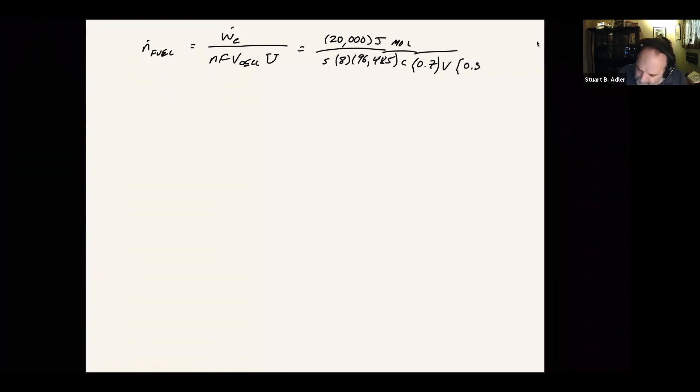We'll talk about why you might choose different levels of utilization, but let's say we put in 80% utilization. And the answer is 0.046 moles per second. So almost twice as much fuel.